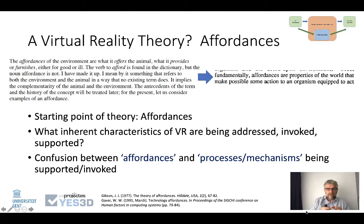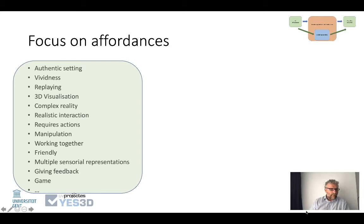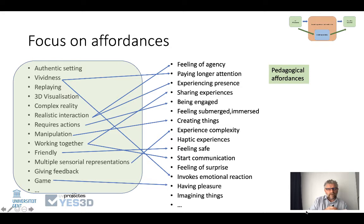We see a confusion between the affordances — what is provided, furnished, offered — and actions being invoked. For instance, this is a typical list of affordances put forward in studies: you can replay, there is 3D visualization, you can work together with other people, it's realistic, authentic, gives you a complex work setting, it's multi-sensorial, you can touch things, move things, design things, it's vivid. But you also find in the literature this other list — these are in fact actions being invoked by the affordances. The feeling of agency results from certain affordances. That's why it may be better to call these pedagogical affordances.